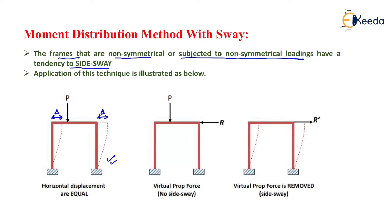If we want to restrain that type of sway, we need to apply a reaction here. By applying a reaction, we have just restricted the sway of this frame. If we remove this reaction R — the virtual prop force R — then the frame will deflect in the rightward direction by a magnitude equal to R dash, and that frame is known as subjected to side sway.